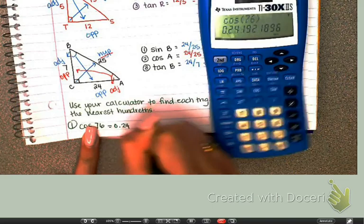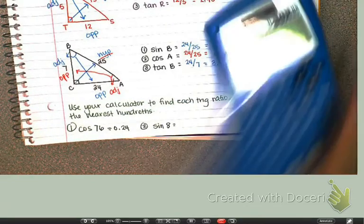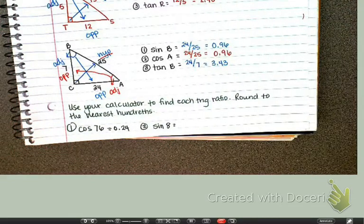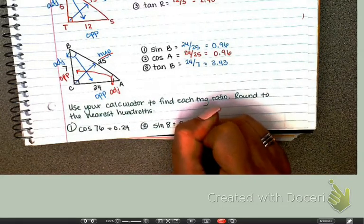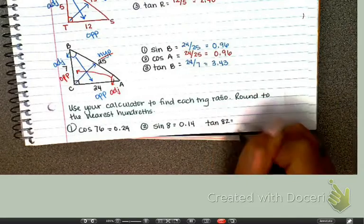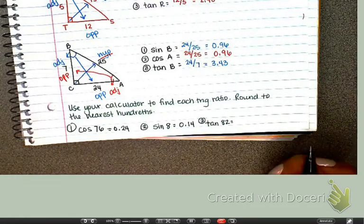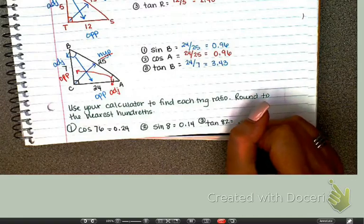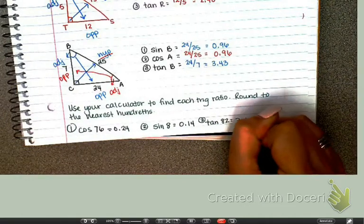Find the sine of 8. Rounded to the nearest hundredth, that's 0.14. What about the tangent of 82? You should get 7.12.